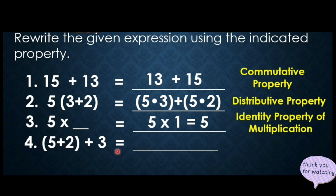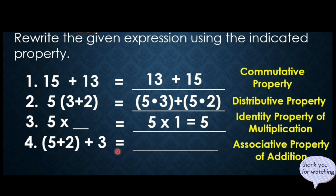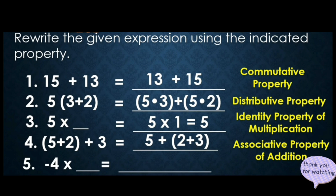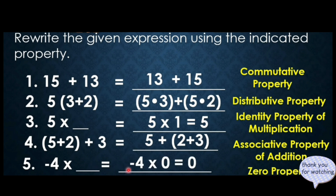Number 4: the quantity (5 plus 2) plus 3 — applying associative property of addition, we change the group so that 5 is now outside and 2 and 3 are inside, giving 5 plus the quantity (2 plus 3). Number 5: negative 4 times blank — applying the zero property, any number multiplied by 0 is always 0, so the answer is negative 4 times 0 equals 0.